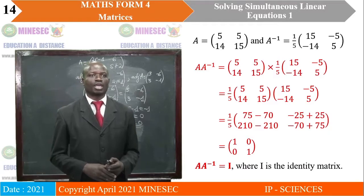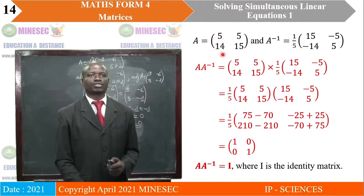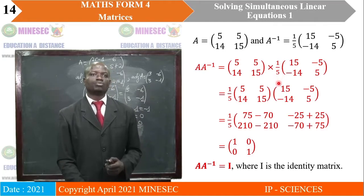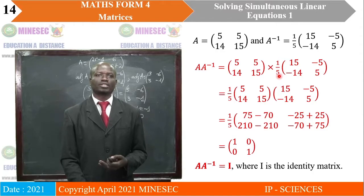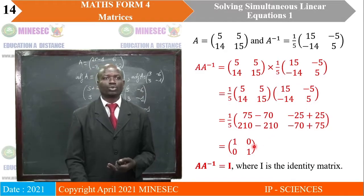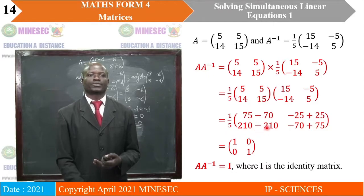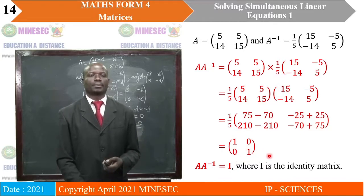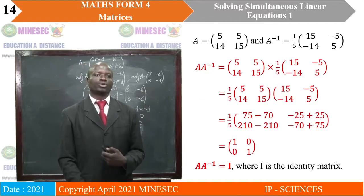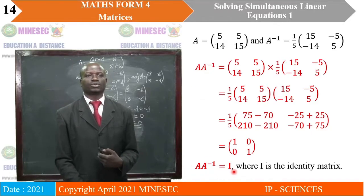The next thing is to find the product A times A inverse. We take matrix A times the inverse. Using the associativity of multiplication, we take the 1/5 to the front and multiply the two matrices first. We get 1/5 into the result, and the final answer is [1, 0; 0, 1]. The property verified is that when you multiply a matrix by its inverse, it gives you the identity matrix.